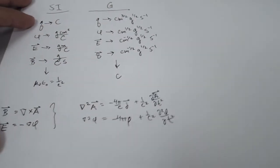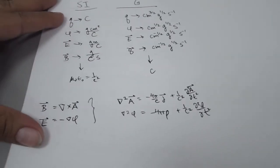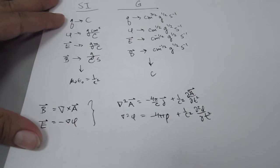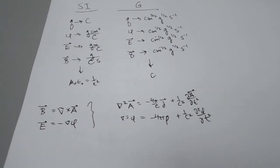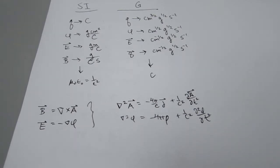If you look at the various units for potential, electric field, and magnetic field — in SI units they all have Coulombs. But in Gaussian units, all of the units are some combination of length, mass, and time. If you play around with Maxwell's equations — which, as we know them today, were published by Oliver Heaviside after he invented vector calculus.